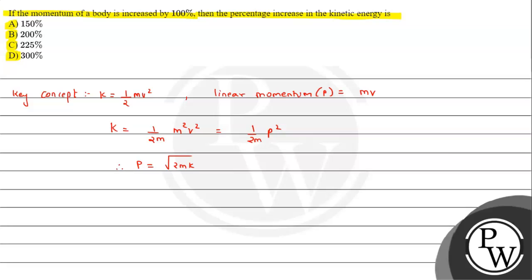Now we will be using this result and try to answer the question given. We have given if the momentum of a body is increased by 100%. If initially it was p, let's say p initial, p final will be increased by 100%, so p plus p, that is twice of p.